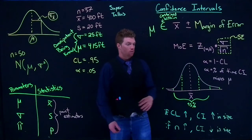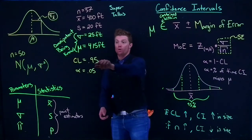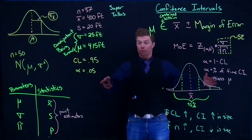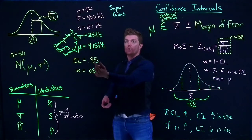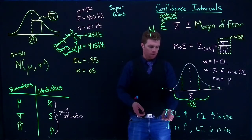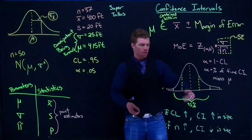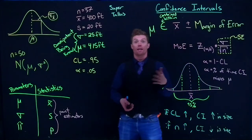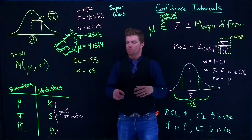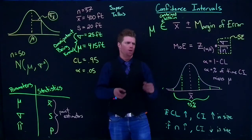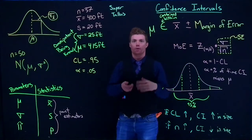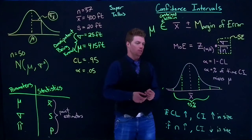If our confidence level increases — say we go to 99% — the width of our confidence interval increases. If our confidence level decreases, like down to 80%, we have a narrower confidence interval. And if the sample size increases, the confidence interval decreases in size. That's why we like big sample sizes in statistics: they make our confidence interval nice and tight.